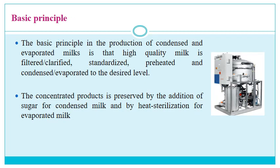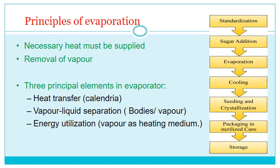The basic principle in the production of condensed and evaporated milks is that high-quality milk is filtered or clarified, then standardized, preheated and pasteurized, then condensed or evaporated to the desired level. The concentrated product is preserved by the addition of sugar for condensed milk and by heat sterilization for evaporated milk. The principles of evaporation require two things: first, the necessary heat must be supplied, and second, removal of vapour. When heat is supplied the vapour comes out from the milk and that vapour must be removed.